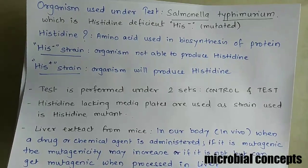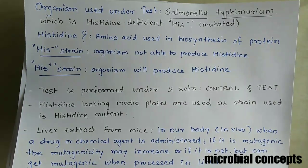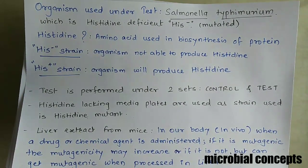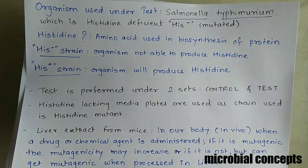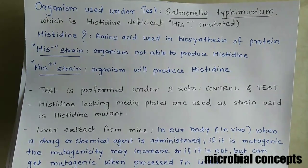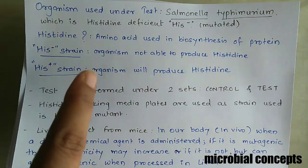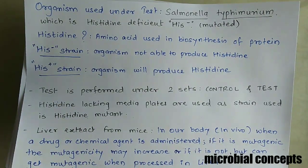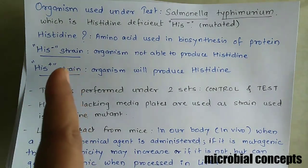The strain used for this test is Salmonella typhi, which is a histidine-deficient mutated strain. Histidine is an amino acid used in the biosynthesis of proteins. The strain we are using is histidine-deficient, denoted as histidine-negative (his−), meaning the organism is not able to produce histidine. When it is able to produce histidine, it is called a histidine-sufficient strain, denoted as his+.